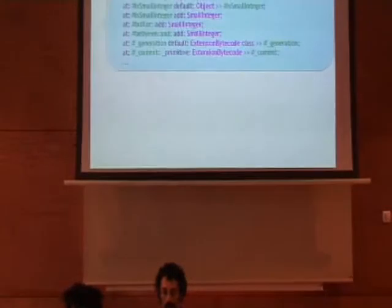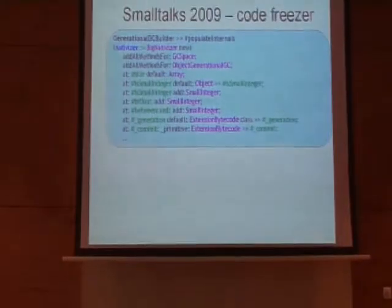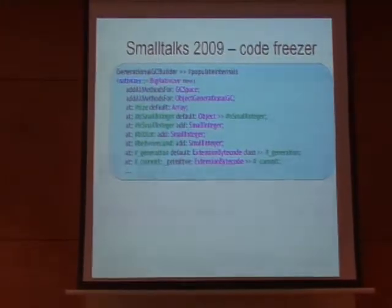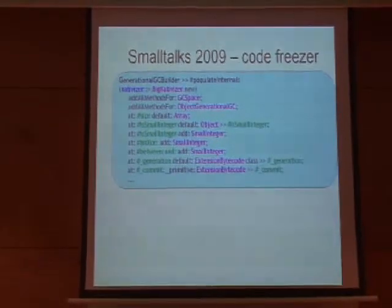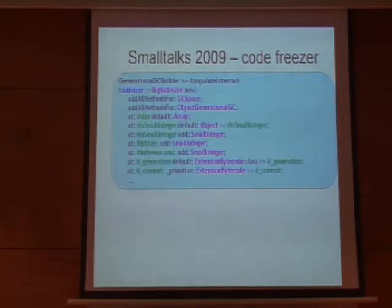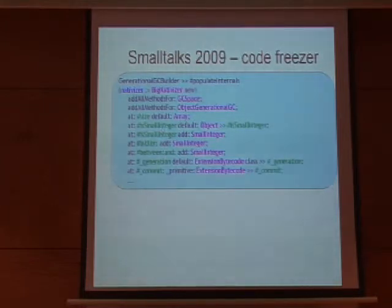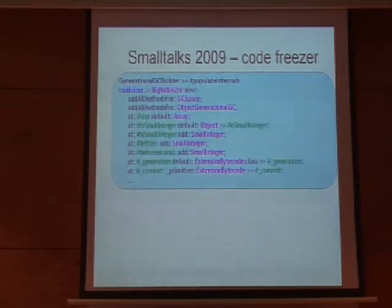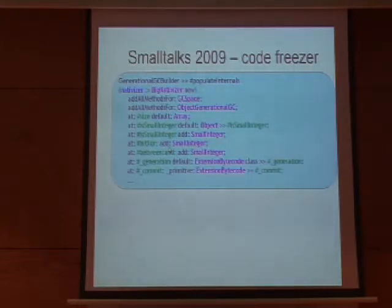You can set a specific implementation for a given selector — for example, whenever anybody calls 'size' from the native frozen code, use this particular implementation. There is intelligence here: you can say whenever anybody calls a method on a small integer on any object, use this implementation. That's because the same name can be used for different types of classes, so we need some kind of dispatcher or lookup. We have different ways to tell the freezer what we want to put into the executable.